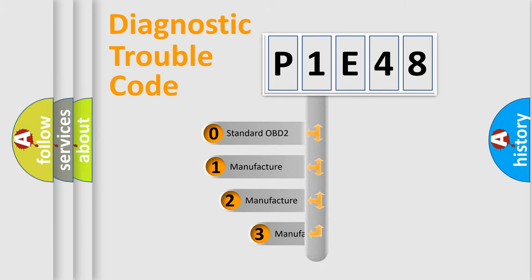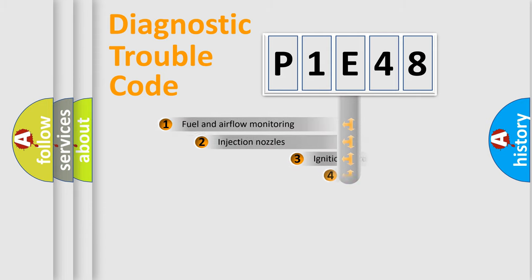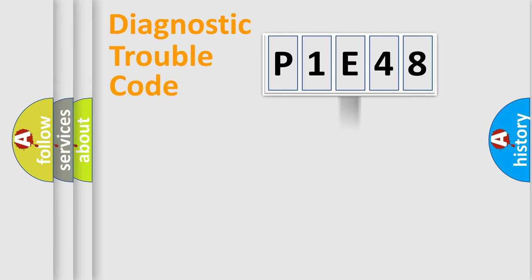If the second character is expressed as zero, it is a standardized error. In the case of numbers 1, 2, or 3, it is a manufacturer-specific error. The third character specifies a subset of errors. The distribution shown is valid only for the standardized DTC code.